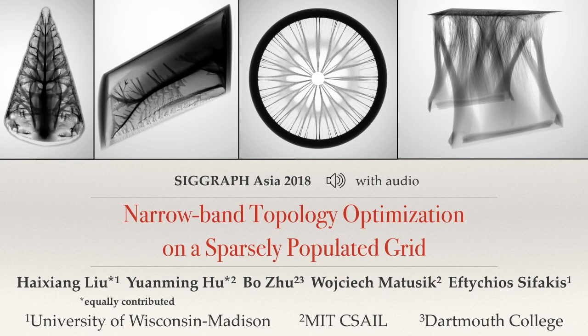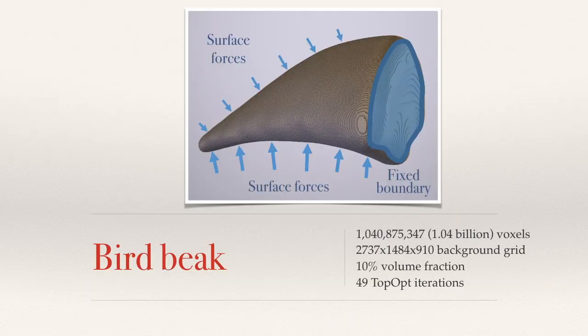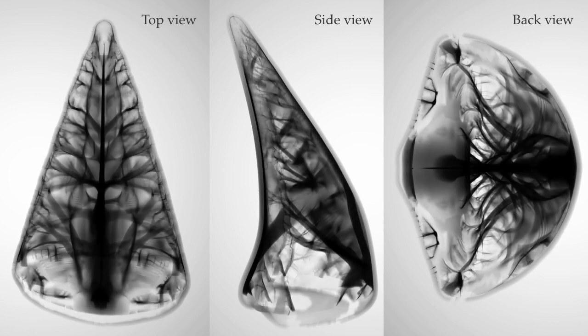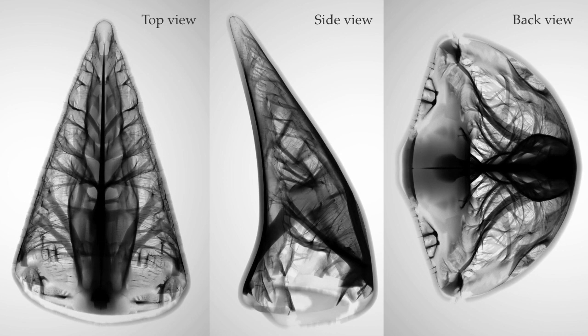We present a computational framework for high-resolution topology optimization with up to 1 billion voxels. This enables us to obtain structures with extremely complex features and high performance. For example, the interior structure of this bird beak is optimized on a single workstation with over 1 billion active voxels on a background grid of nearly 4 billion voxels.